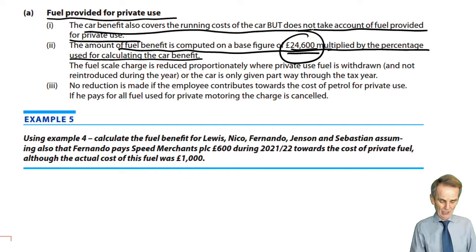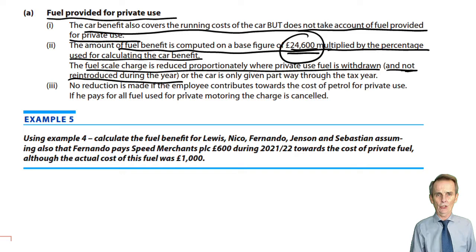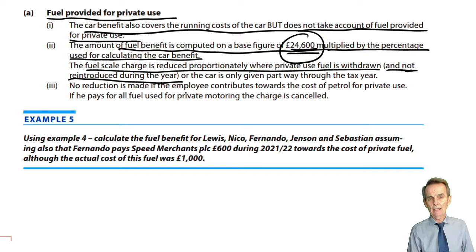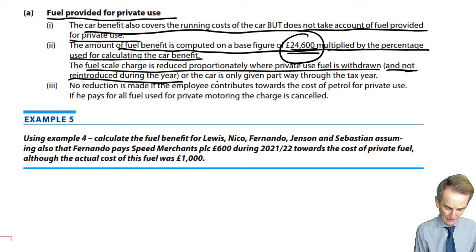The fuel scale charge is reduced proportionately where private use fuel is withdrawn and not reintroduced during the tax year. If you've only had the provision of private fuel for six months and it's totally withdrawn without being reintroduced, you time-apportion down to half a year's assessment. Similarly, if the car is only acquired part way through the tax year, both the car benefit and the fuel benefit are time-apportioned.